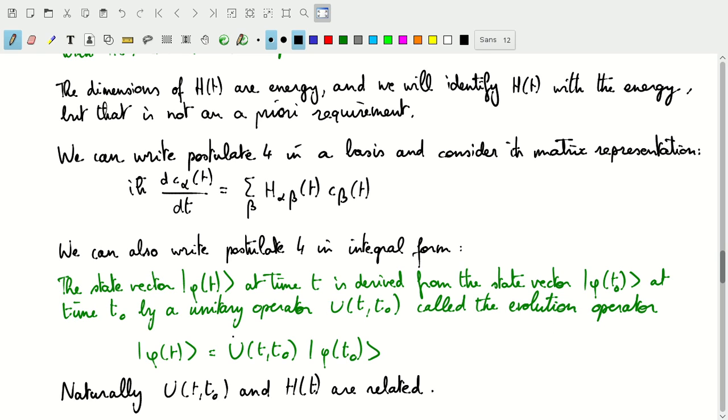So there is a unitary operator that depends on the two times, the time at origin and the time we want to evolve to, and it operates on the state at the time of origin, so t0. And that gives us back our state at a time t.